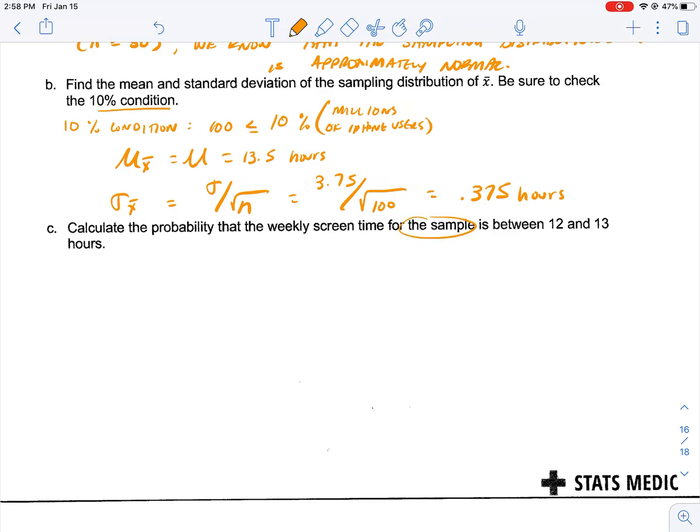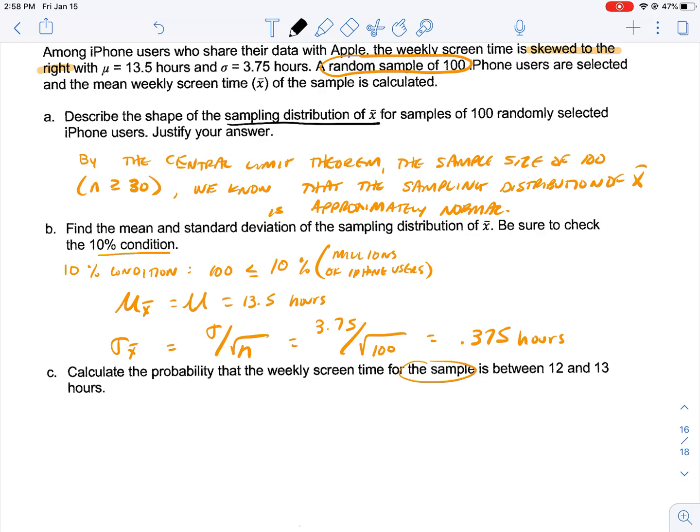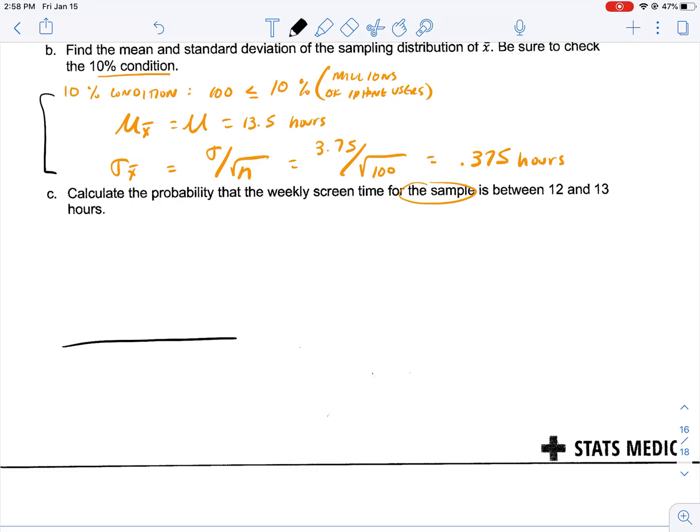Then it says calculate the probability that the weekly screen time for the sample is between 12 and 13 hours. Because it's normal, and now we have our 10 percent condition, we have our mean and our standard deviation. We can draw our curve here, call it normal, with N(13.5, 0.375). This is 12, this is 13, and we want the area between 12 and 13. There's a couple of different ways to do this. We could do it based on our z-scores, so we could take our 12 hours minus our mean of 13.5, divide by our standard deviation, which would give us a z-score of minus 4.